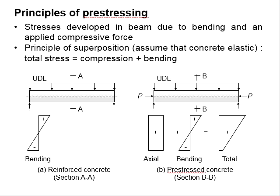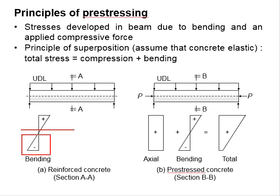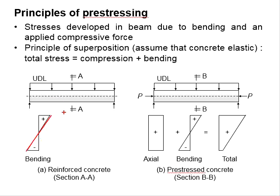Principles of pre-stressing: stresses develop in a beam due to bending and the applied compressive force. When the beam is subjected to uniformly distributed load, the beam undergoes bending. The concrete regions below the neutral axis undergo tension, while above the neutral axis undergo compression. The stress is distributed about equally throughout the sections.